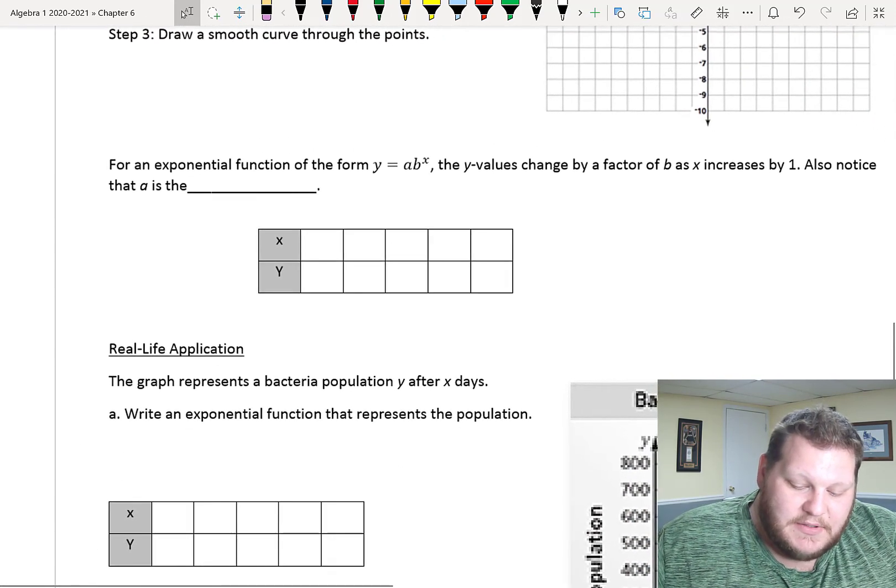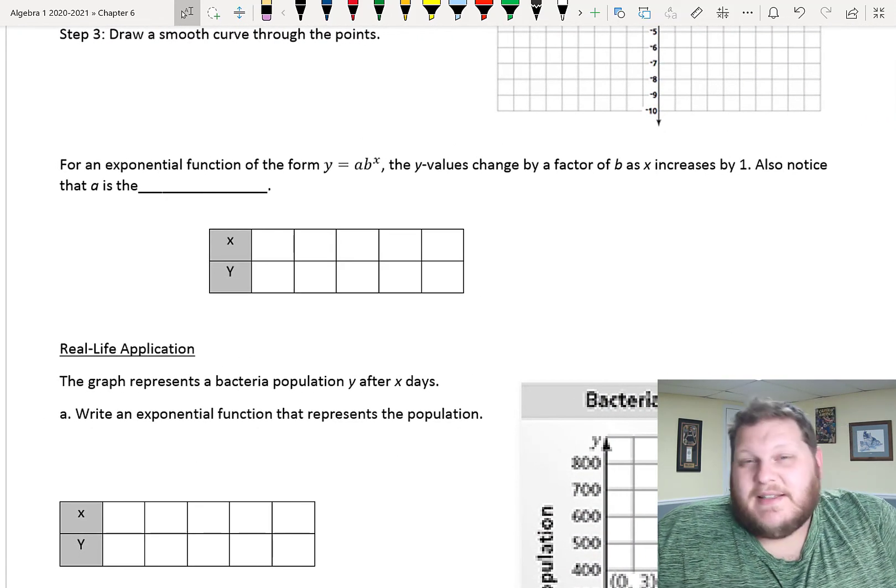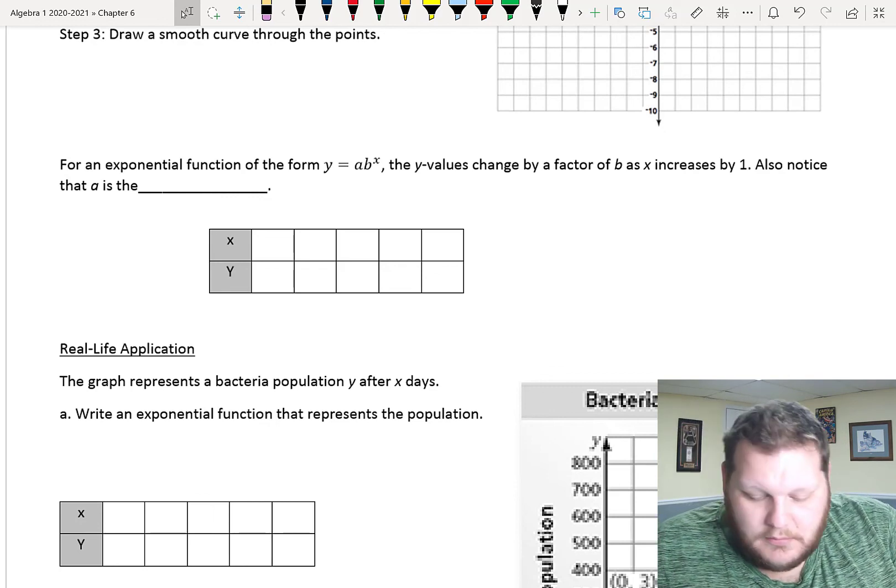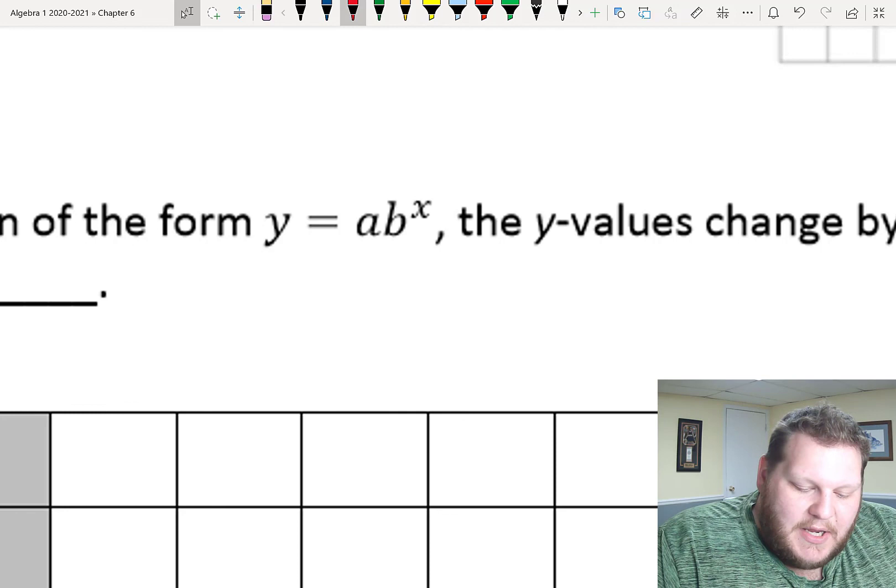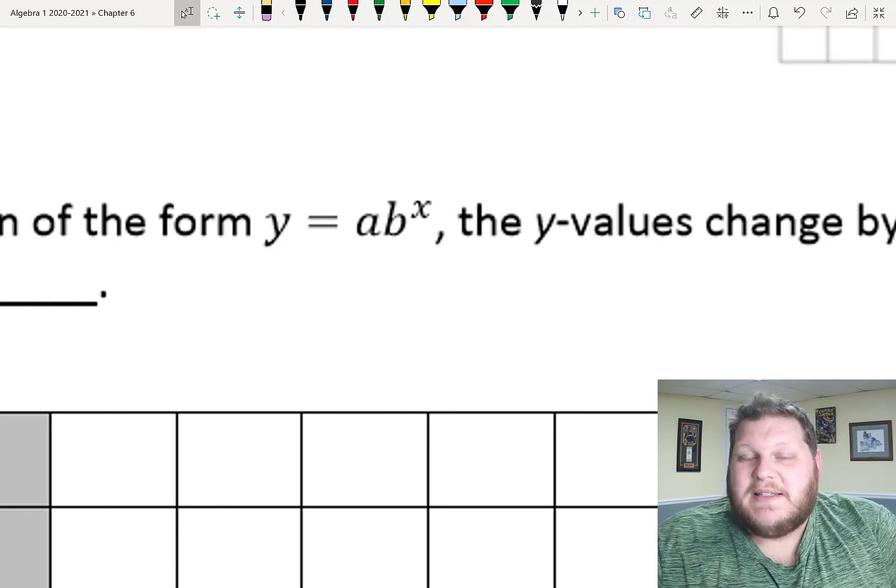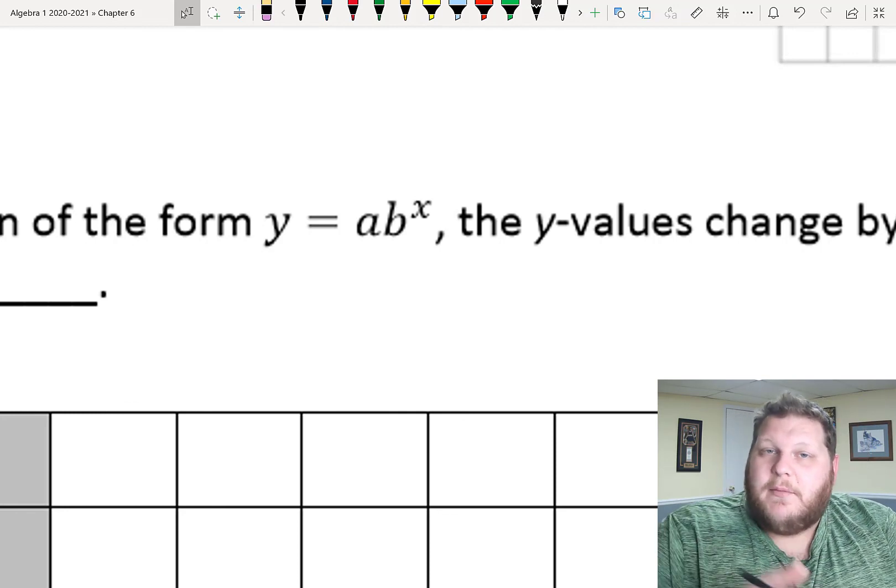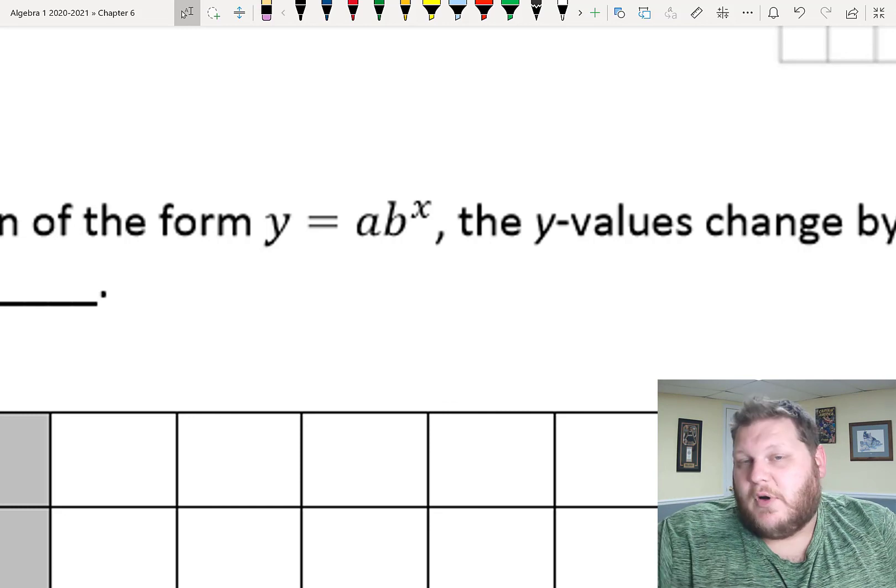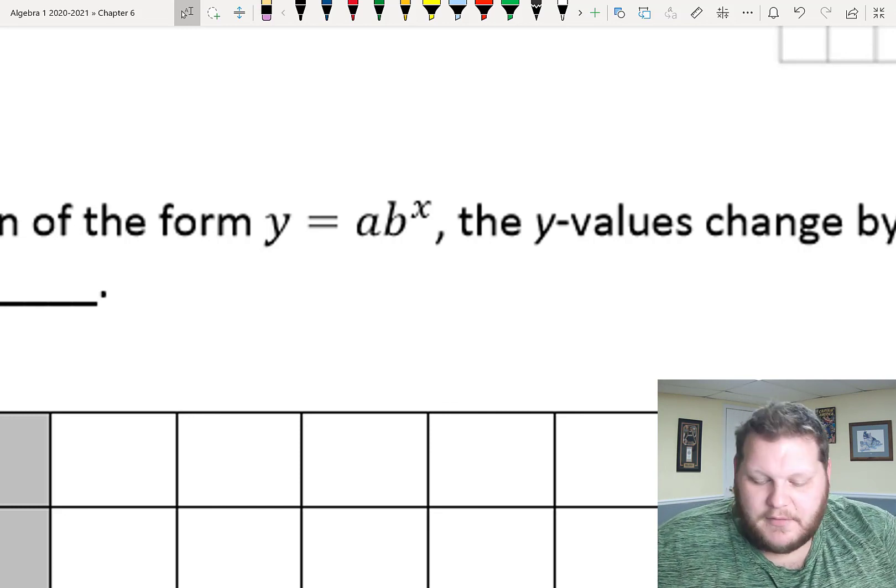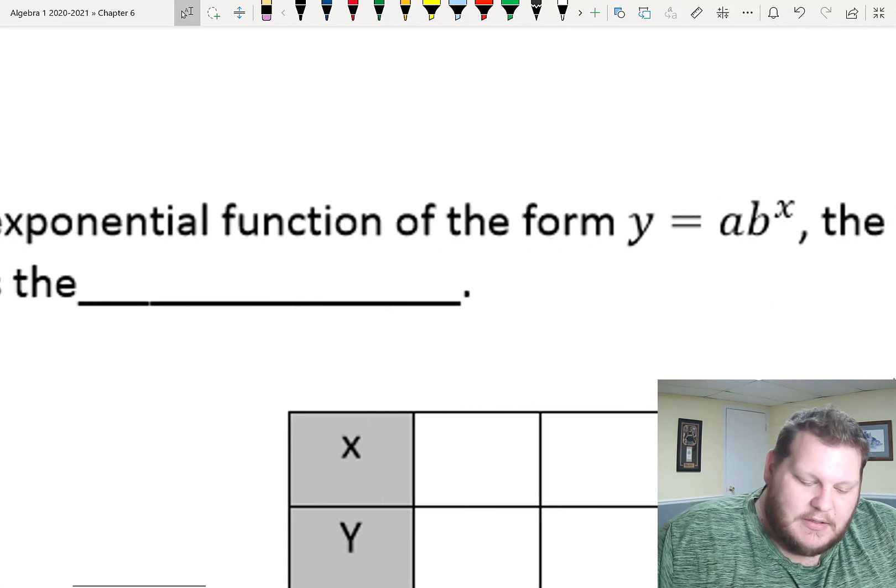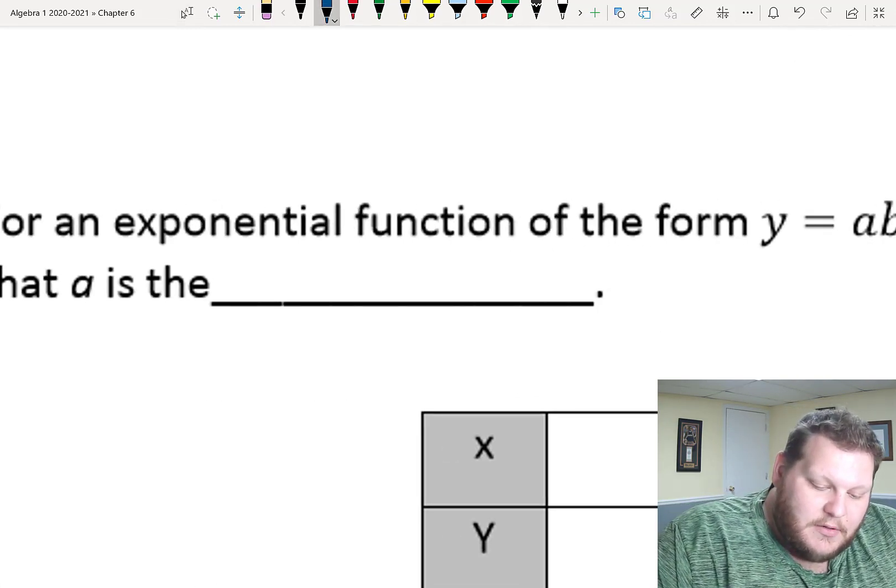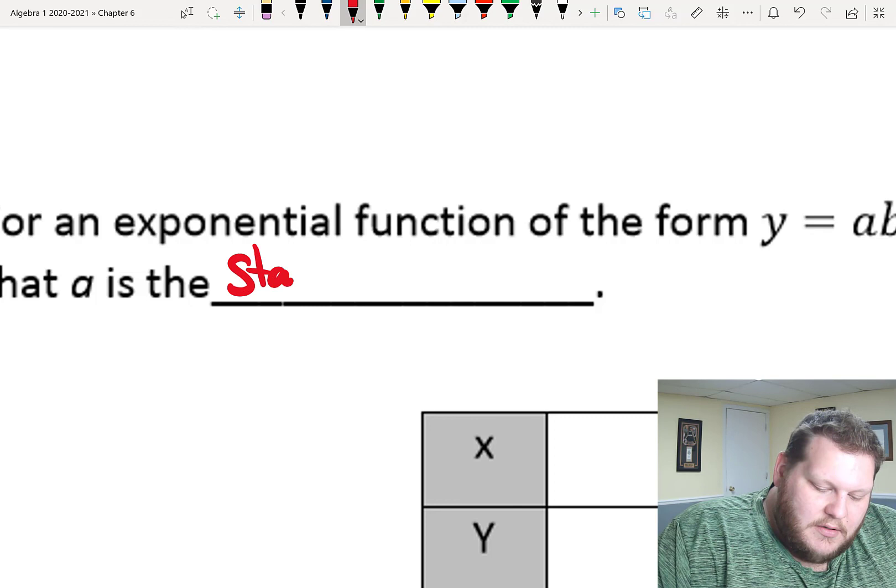Something we haven't talked about yet, or utilized yet, is that a value in my equation. In the equation, y equals a times b to the x power. My b value, that's my base, which means that's my multiplier. That's how I get from one to the next in my table, or one to the next for my y values in my graph. The a value that we haven't used yet is my starting value.